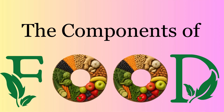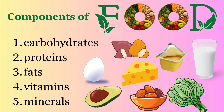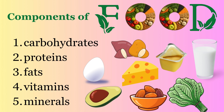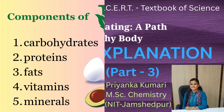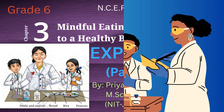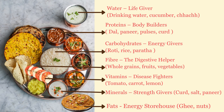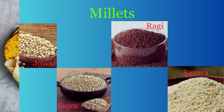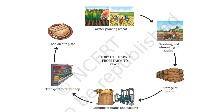In Part 2, we learned about the components of food like carbohydrates, proteins, fats, vitamins and minerals, and how each one helps our body stay strong and healthy. Now in Part 3, we are going to learn how to test food to find out what nutrients it contains, what a balanced diet means and why it's important, about millets — the superfoods of India — and the journey of food from the farm to our plate, called food miles.